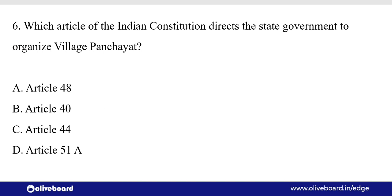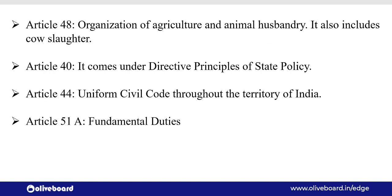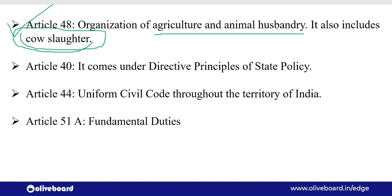Which article of the Indian Constitution directs the state government to organize village panchayat? Village panchayat हमें India में organize करना है — यह Article 40 में दिया गया है। पहली बात, it's a DPSP — Directive Principle of State Policy — and we have taken it from Ireland. Article 48 में Organization of Agriculture and Animal Husbandry है, और it also includes cow slaughter। यहाँ से question आ सकता है कि कौन सा article है जिसमें यह लिखा गया है that cow slaughter should be prohibited in India — वो है Article 48। ये DPSP हैं, that means they are not enforceable in the court of law.